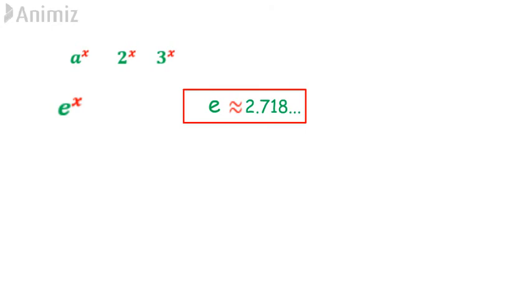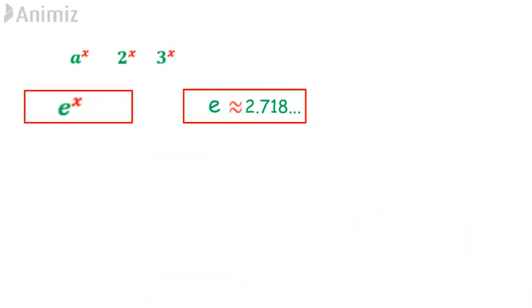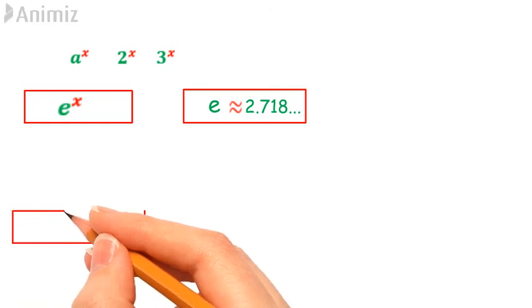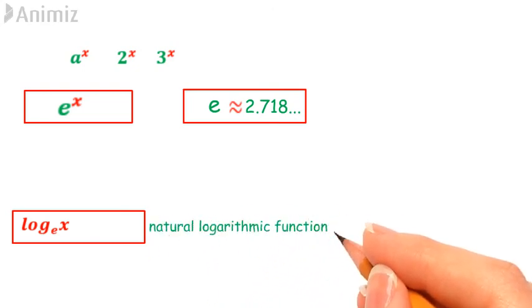The exponential function with base E is written as E to power of x. The reverse of E to power of x is log x base E, or called as natural log, written as ln x. ln x is a logarithmic function with base E.